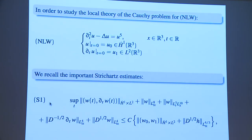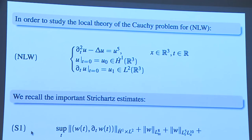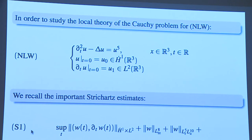From now on I will stick to 3D, so there are no more general fractions to remember — there will be specific fractions like four-thirds. This is our nonlinear energy critical focusing wave equation. For the study of these equations, there are important estimates called Strichartz estimates, which play the role of Sobolev estimates in wave or dispersive equations. There are many Strichartz estimates; I will give examples of the ones we are going to use.